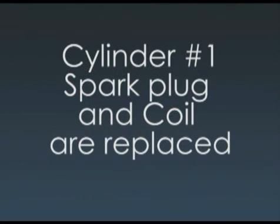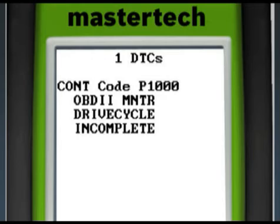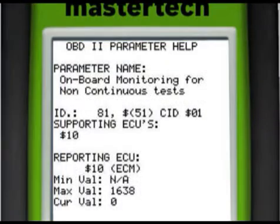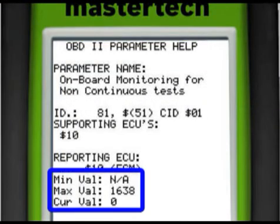After replacing the number 1 coil and spark plug, we take the truck for a final road test to verify our repairs. We make sure to clear any DTCs that we may have set during our test. We watch the IM readiness monitor status to make sure that most of the monitors are complete, and then recheck the Mode 6 data. The Mode 6 data confirms that the truck is repaired.